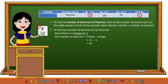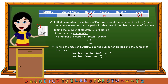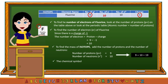To find the mass number of the isotope of fluorine, add the number of protons and the number of neutrons: 9 plus 10 equals 19. The chemical symbol of fluorine is F. Therefore, F-19 is the isotope of fluorine.